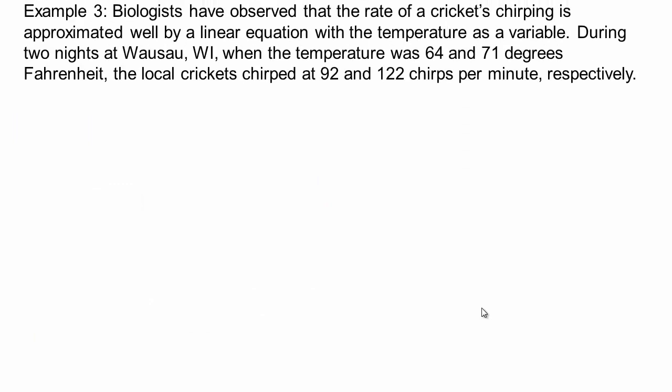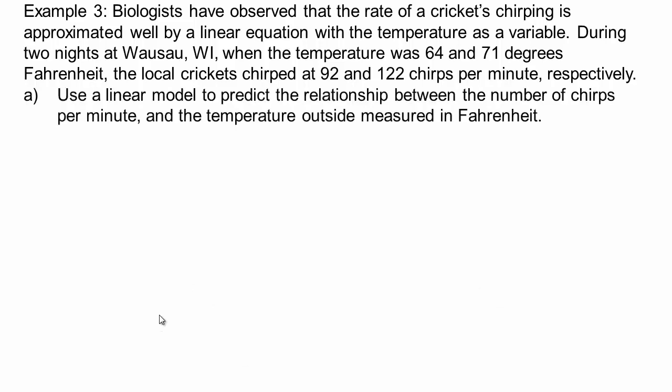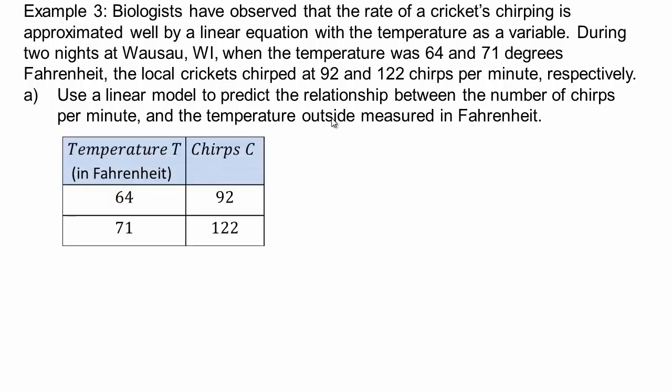All right, let's take a look at this next example. Biologists have observed that the rate of crickets chirping is approximated well by a linear equation with the temperature as a variable. During two nights in Wasa, Wisconsin, and the temperature was 64 and 71 degrees, the local crickets chirped at 92 and 122 chirps per minute respectively. So let's put our questions here. They're saying use linear model to predict relationships between number of chirps per minute and the temperature outside. All right, so here we have temperature and here we have chirps.